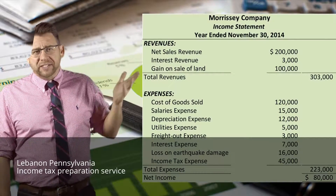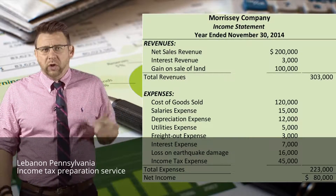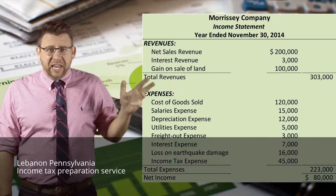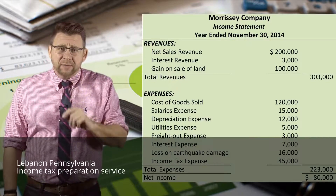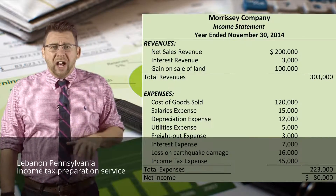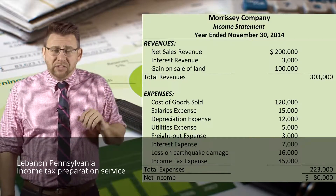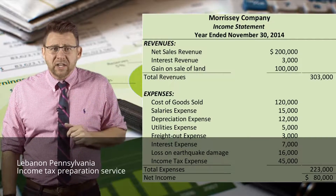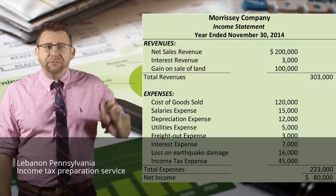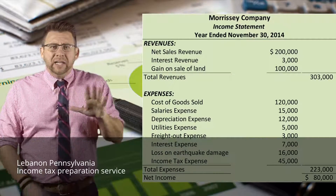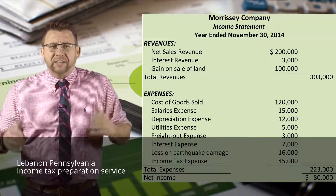Here is an example of a single-step income statement. You can see that revenues and gains, which we will learn about later, are all listed together — same with expenses. One area that some students struggle with: when we report financial statements, if we have a list of common accounts like revenues and expenses, we list them all in one column and carry the total out to the far column. That does not mean the columns represent debit and credit when presenting financial statements.